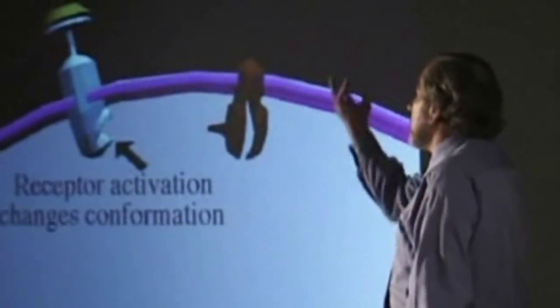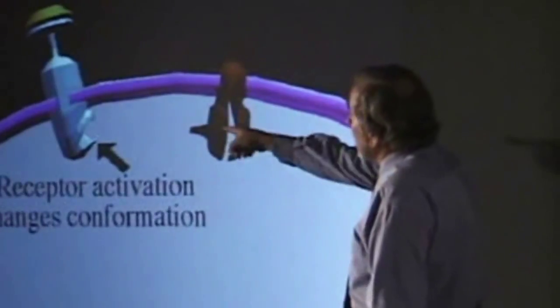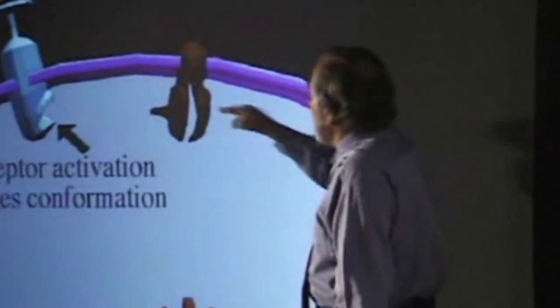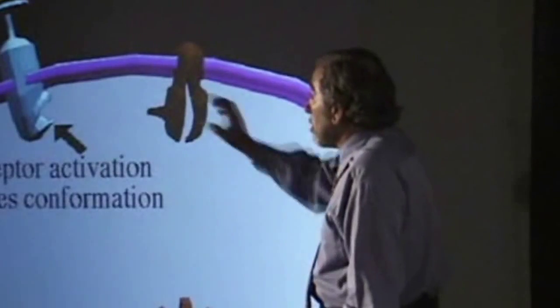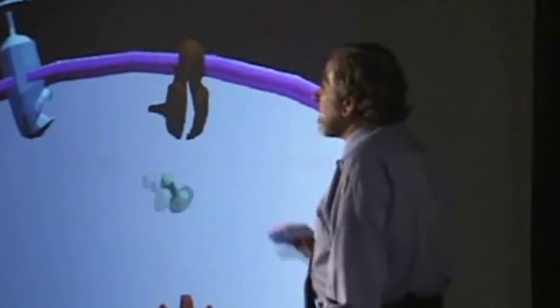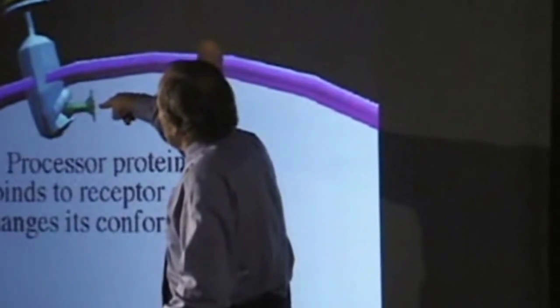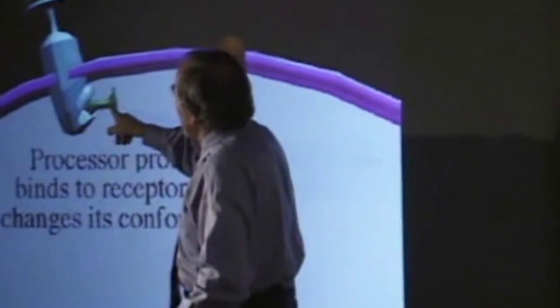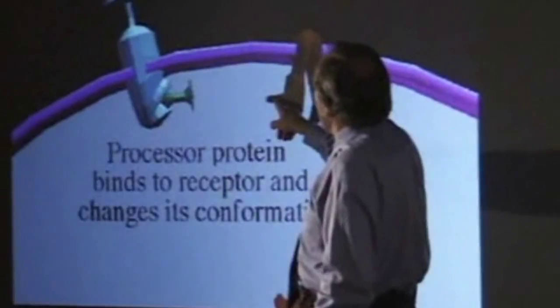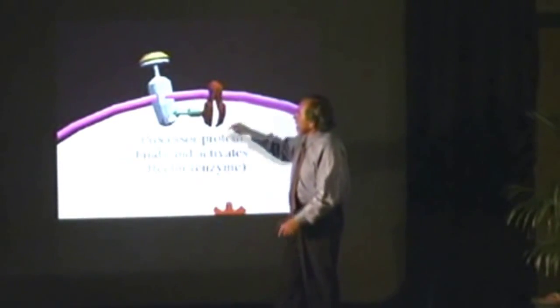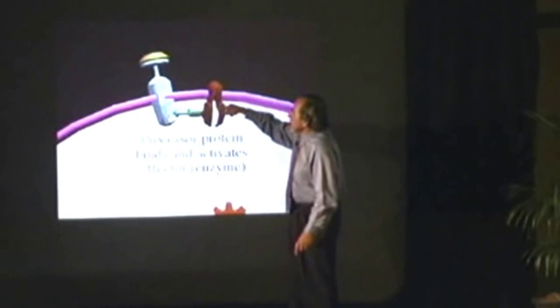So the protein informs the cell that something has happened. Now that that shape has changed, this processor protein, the green one, can bind to the shape because it wasn't able to bind before. It's like dominoes, one hitting the next. Now that the processor protein is bound to the receptor, it changes its shape and will conform to fit the enzyme. So one domino hits the next, hits the next. Now that this is connected, I activate the enzyme.